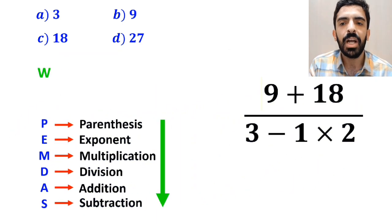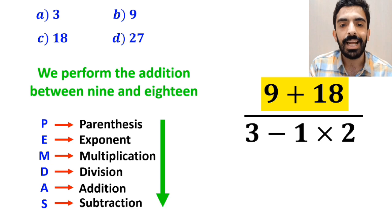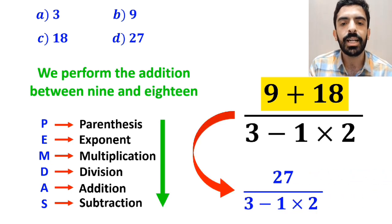In the next step, we perform the addition between 9 and 18. And instead of this expression, we can write 27 over 3 minus 1 times 2.